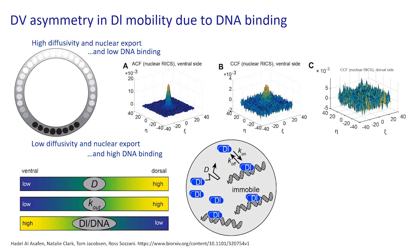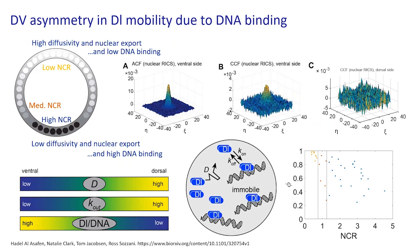The cross-correlation function has a very clear peak when looking at the ventral side, but on the dorsal side there's no peak. So there's high correlation between fluctuations of dorsal and DNA together in ventral nuclei, and no correlation between dorsal and DNA fluctuations on the dorsal side. This means dorsal is bound to DNA on the ventral side but not on the dorsal side. Using this we can calculate the ratio of dorsal that is free to diffuse versus bound to DNA from looking at these cross-correlation functions.